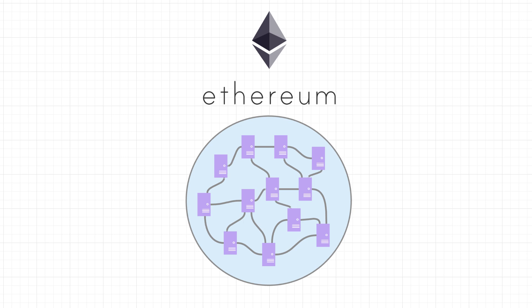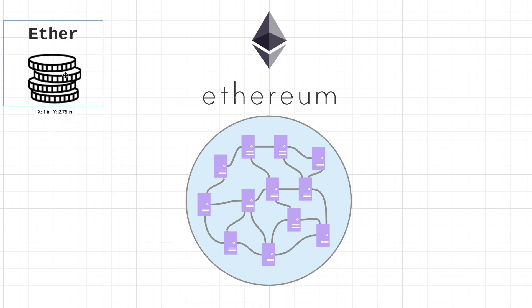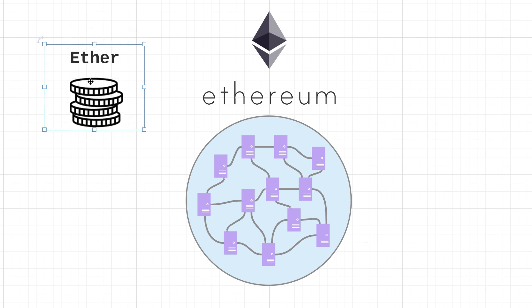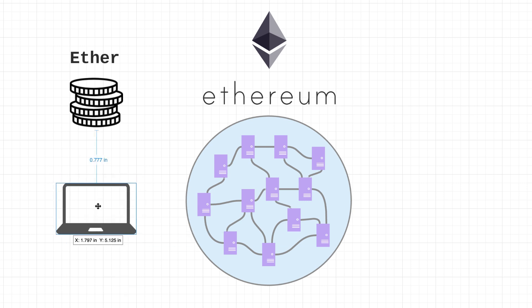Welcome back to another tutorial. In this one we're going to be talking about ether. So where to start — what the heck is ether? Ethereum's unit of currency is called ether, and you need ether to do pretty much anything on the network, aside from some very basic things like reading data from the network for free. Let's just say that you need ether to do anything interesting on the Ethereum network.